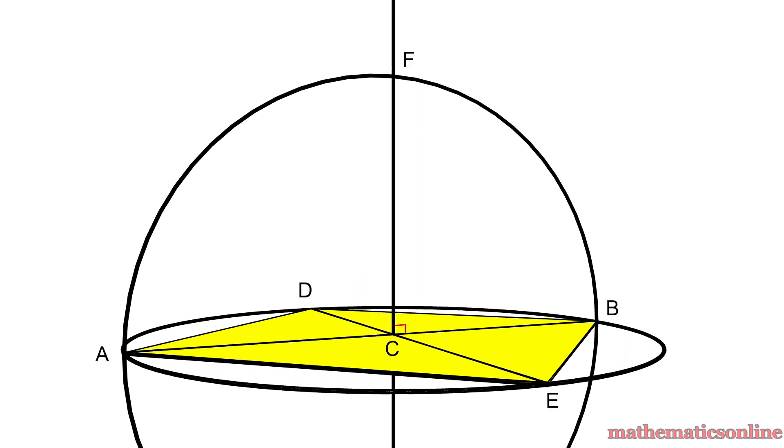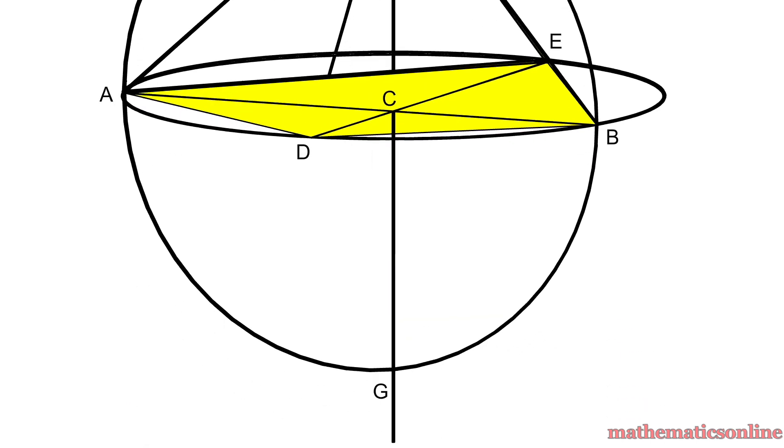Finally, at the top we construct lines AF, DF, BF, and EF, and at the bottom construct lines AG, DG, BG, and EG.